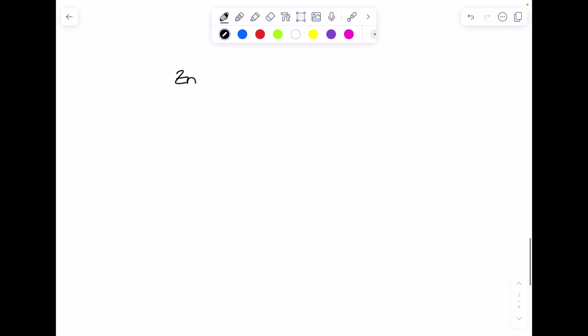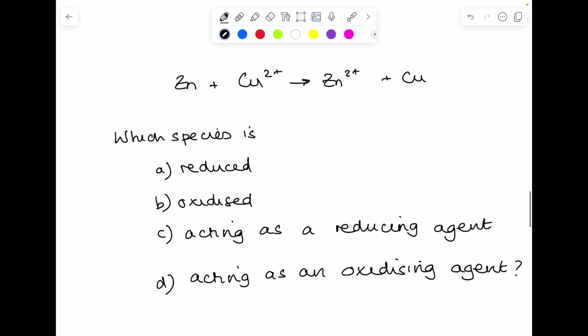Now we'll take another example. So here's zinc reacting with copper 2 plus ions. Here we're being asked to find which species is reduced, which one's oxidized, which one's acting as a reducing agent, which one's acting as an oxidizing agent. So we'll start here.